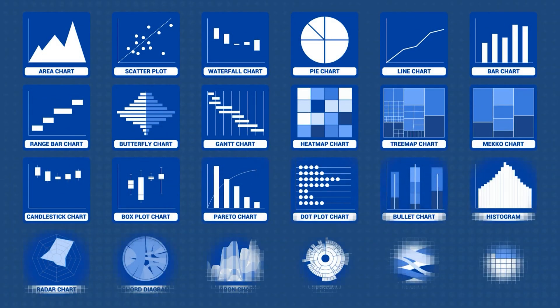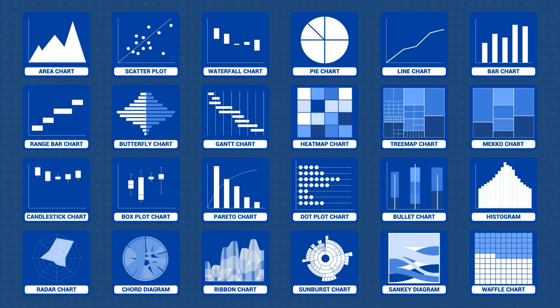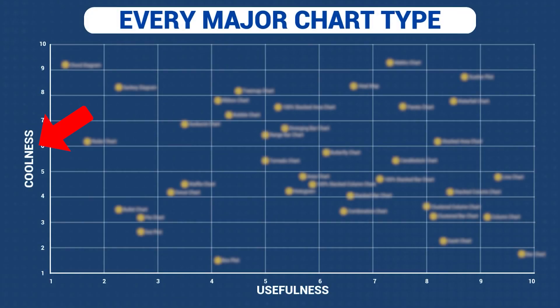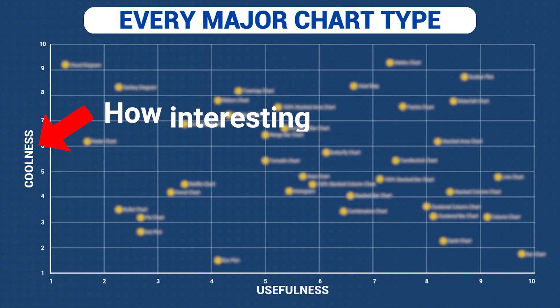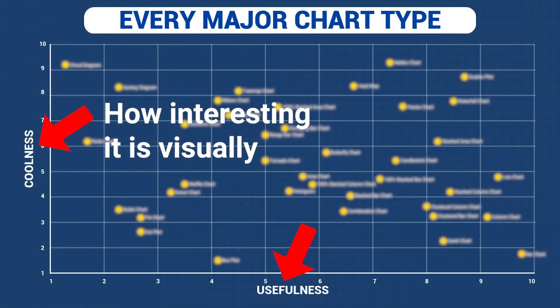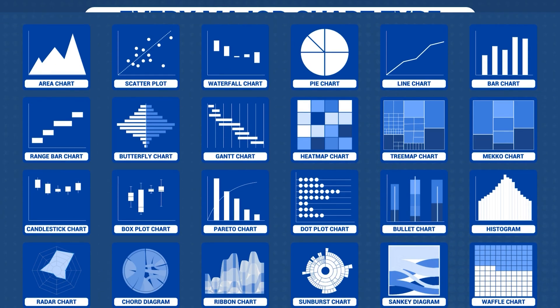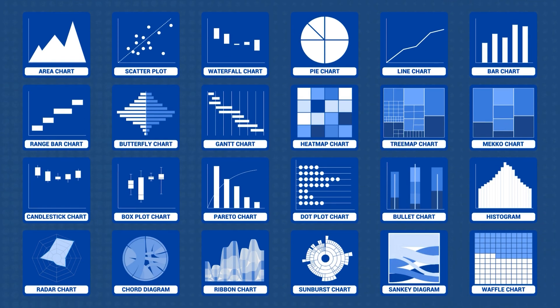I went through every chart type I can imagine, from really basic to extremely complicated, and I picked out the charts that I think everyone should know and understand. I've rated each chart across two dimensions: coolness, or how interesting it is visually, and youthfulness, or how likely you are to actually use it at work. I'll explain exactly when to use each one, and maybe more importantly, when not to use them.